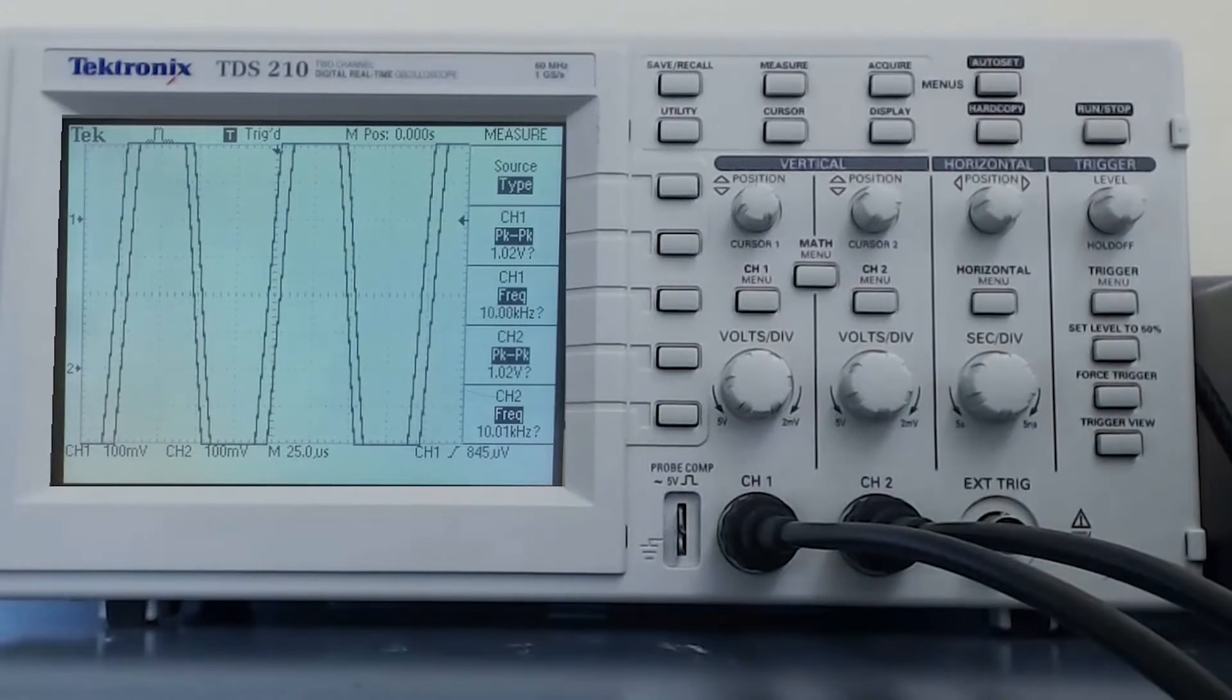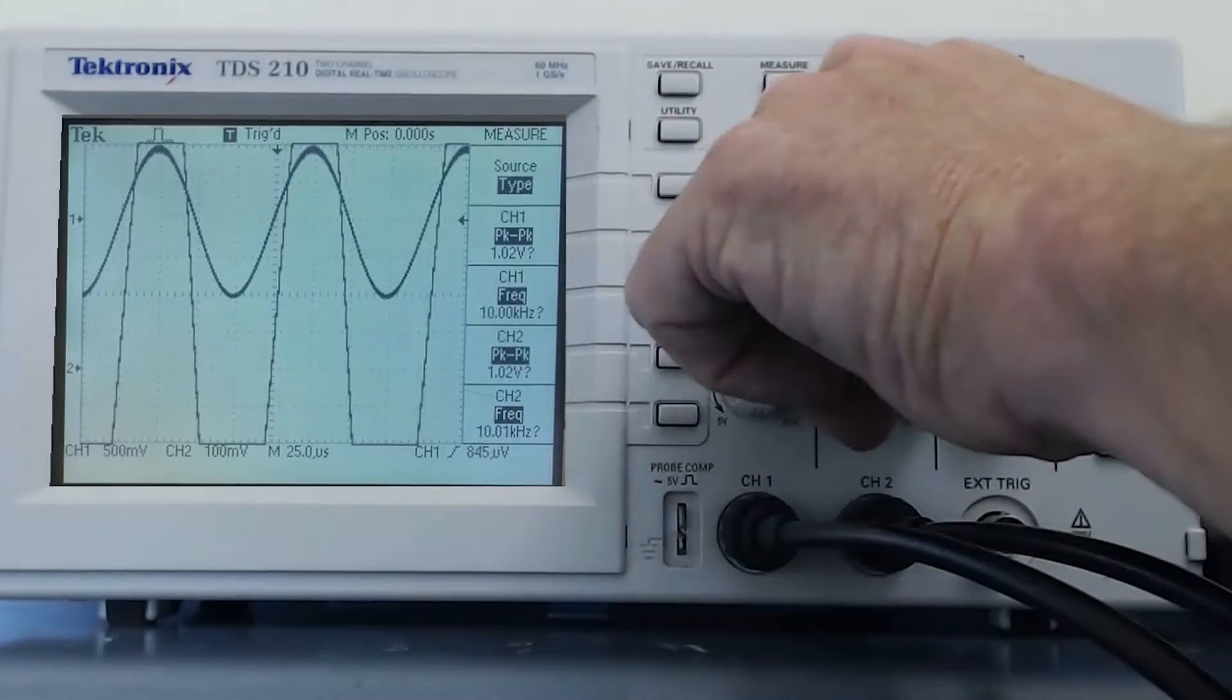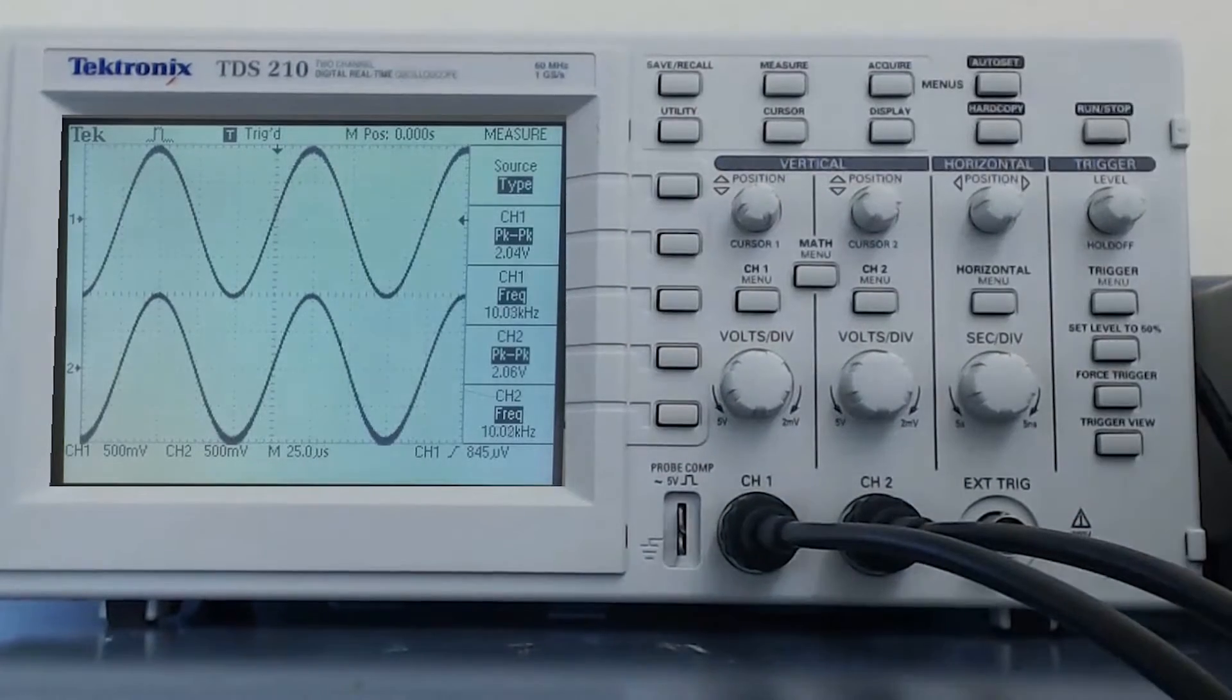We can also adjust the volts per division to allow the display to show a 1 volt peak to peak signal. Which, if you watch the function generator video, you know will actually show up on the oscilloscope as a 2 volt peak to peak signal. And that has to do with the output resistance of the function generator.